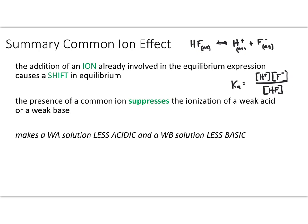If we add an ion that shows up in the equilibrium expression to the solution containing HF, we are adding what's known as a common ion. The common ion we could add here that would be easy to analyze is F⁻. How could we add F⁻ to this solution? If we take a salt such as sodium fluoride and drop it into that container, it will break up into its ions. By adding sodium fluoride into the container that has HF, we are adding F⁻, and F⁻ is our common ion.